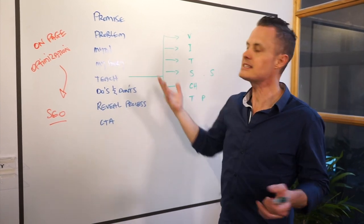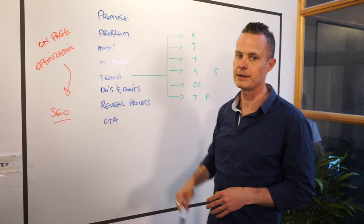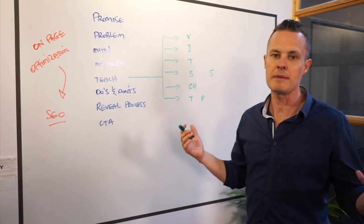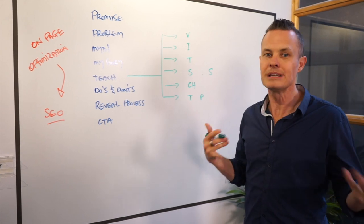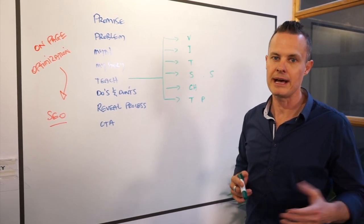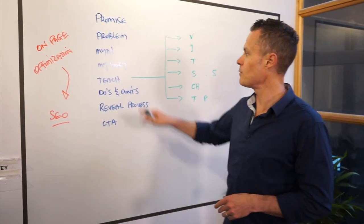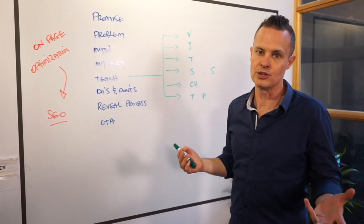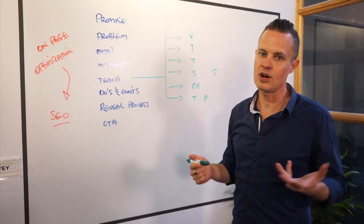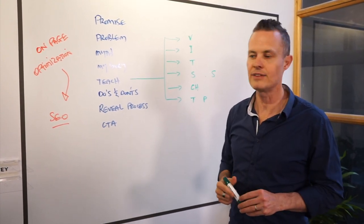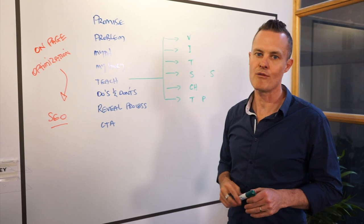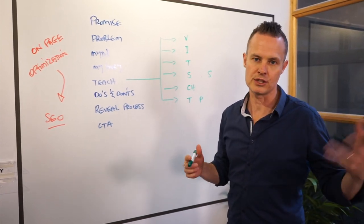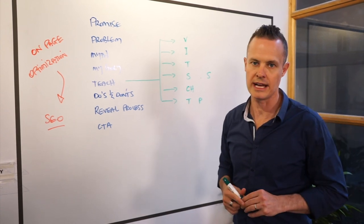So just outline the problem they currently have: you haven't got enough leads because you can't be found on search engines, and there's a very simple fix. Then you want to bust a myth. In this case, the myth might be that you can just install a free WordPress plugin and it will automatically optimize your website — it might do a little bit, but there's still stuff you have to handle manually. Then very quickly tell your story to position yourself as why they should listen to you. You might say you've been running SEO for clients for over three and a half years and most clients have page-one rankings, and mention a testimonial from a customer.